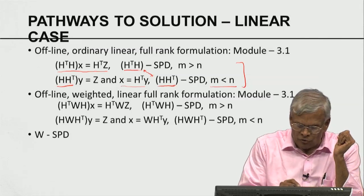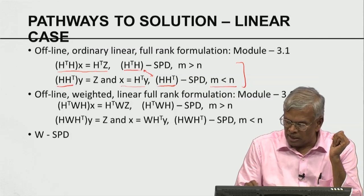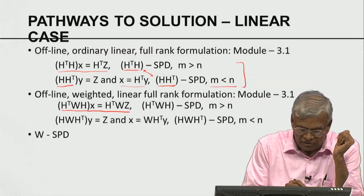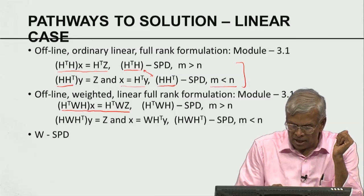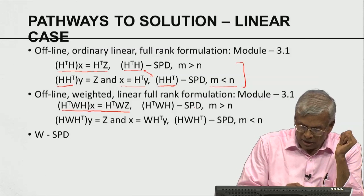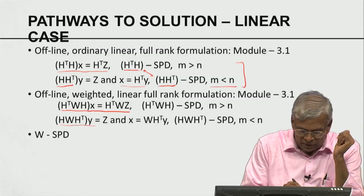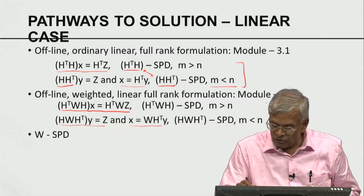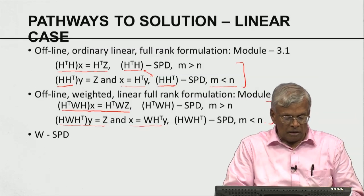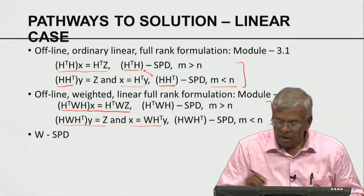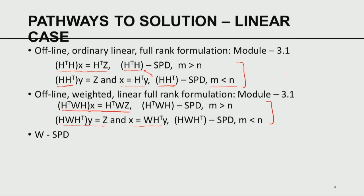In the offline weighted linear full rank formulation from module 3.1, we are called upon to solve a system where H^T W H is a symmetric positive definite matrix. In the under-determined case again, we solve a similar problem to compute the weighted solution. In all these cases, we are solving a linear system of the kind Ax = b where A is symmetric and positive definite.